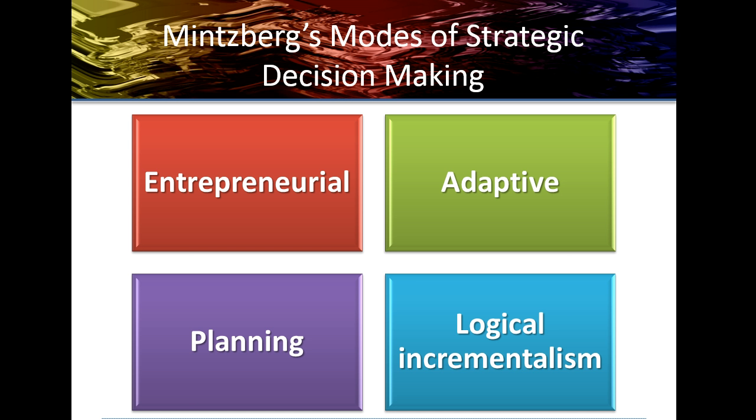The adaptive mode refers to what the book calls 'muddling through' — a decision-making mode that characterizes a reactive solution to existing problems rather than a proactive one. You're not really searching for new opportunities; you're recognizing a problem and adapting to compensate for it. It involves incremental or smaller changes rather than a huge shift.